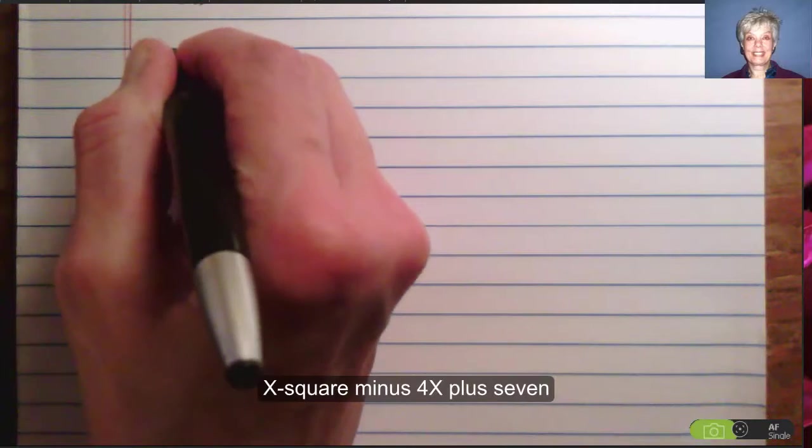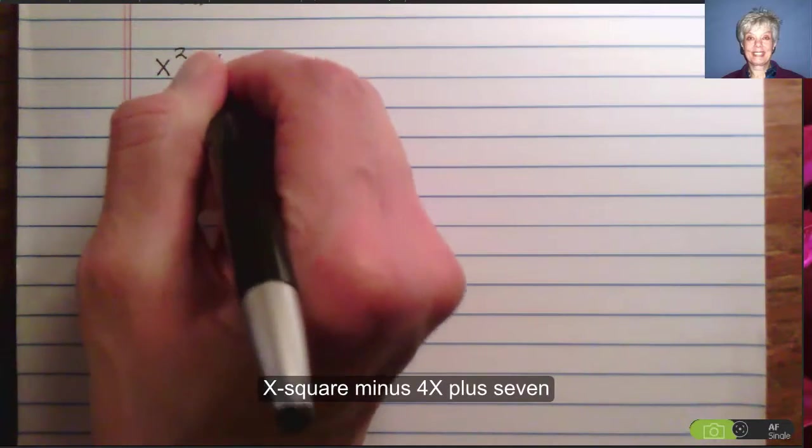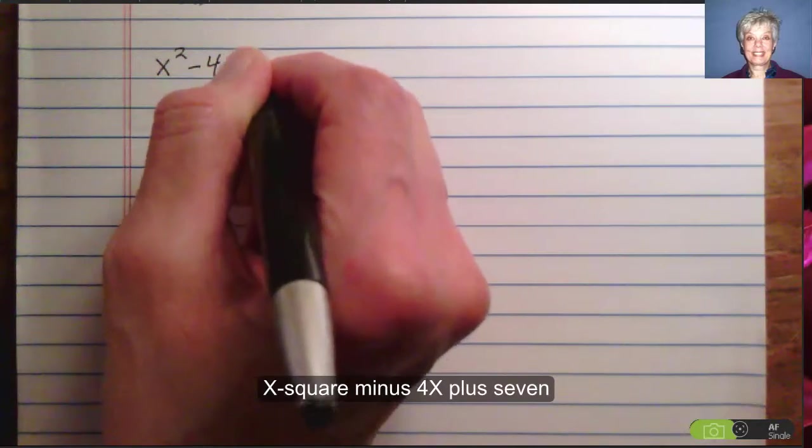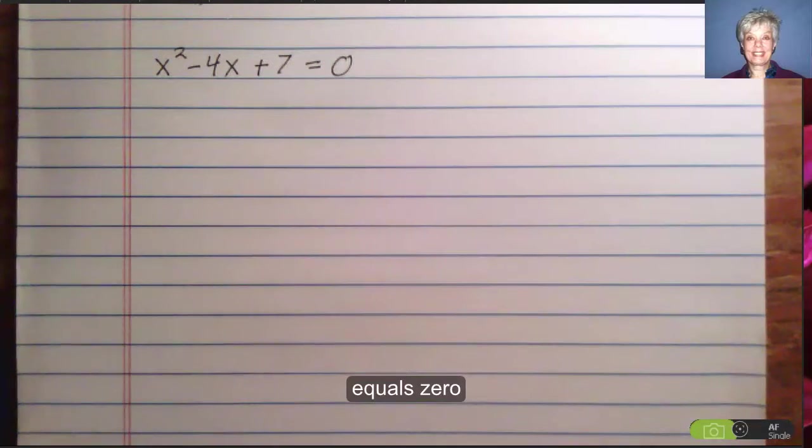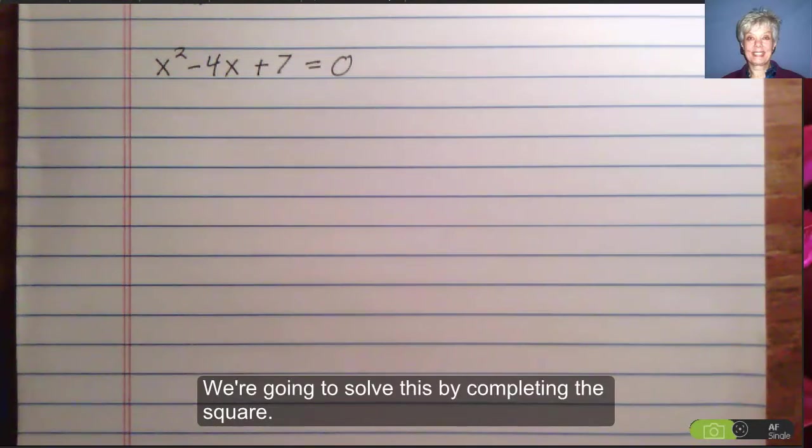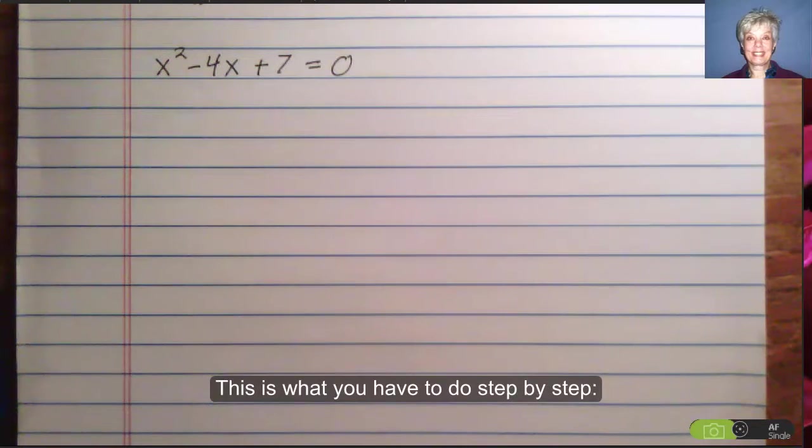How about x squared minus 4x plus 7 equals 0. We're going to solve this by completing the square. This is what you have to do step by step.